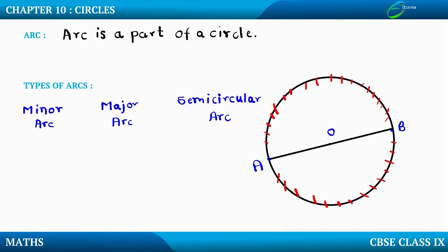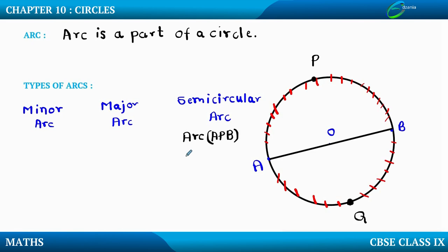To name these arcs, I need a third point, so I am taking a point on the circle — let me name this P — and one more point down here — let me name this Q. So I can say arc APB as well as arc AQB, and both of them can be called semi-circular arcs.